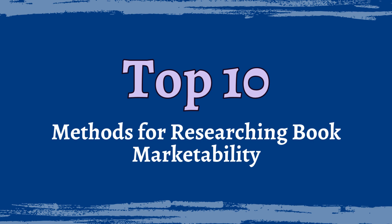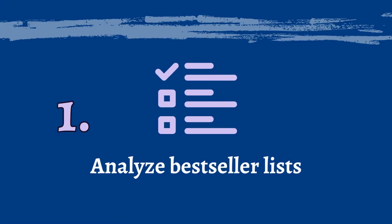The top 10 methods for researching book marketability. Number one: analyze bestseller lists. Review the bestsellers on platforms like Amazon, New York Times, and USA Today. Identify the popular genres, the themes, and anything that's trending. Make sure you stay fresh on all of the trending and relevant topics.